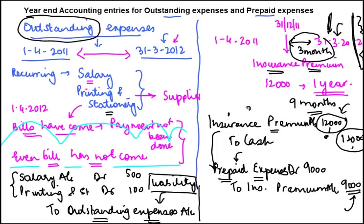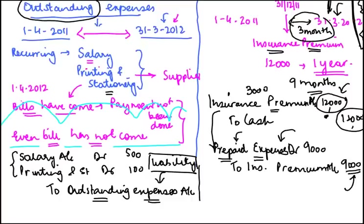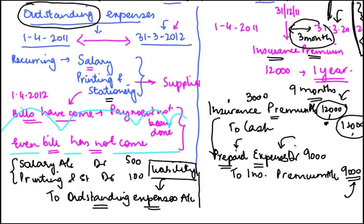If we debit 12,000 and credit 9,000, the net debit remaining in the account is 3,000. The 9,000 goes to sit in the balance sheet. Next year when the year ends, you reverse this amount and book it to the insurance premium account. That's what a prepaid expense is.